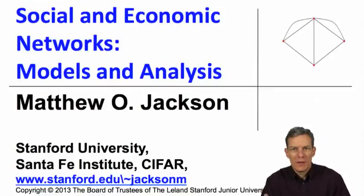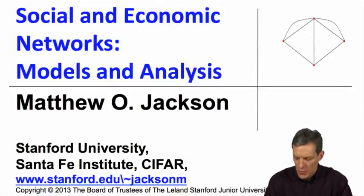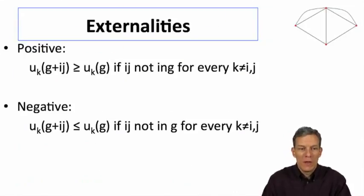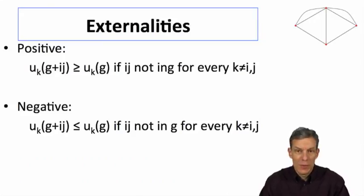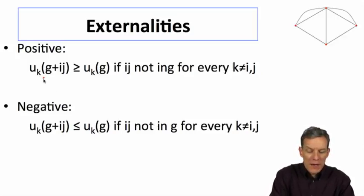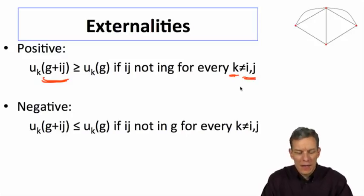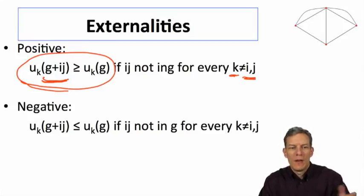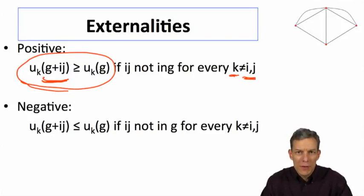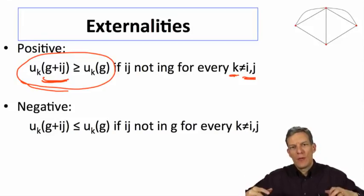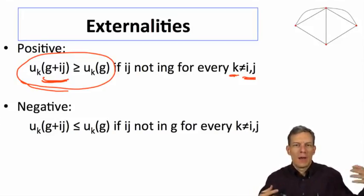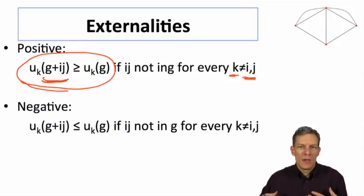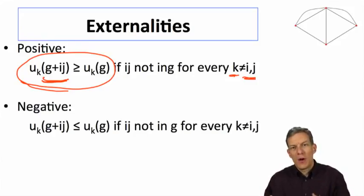Let's have a look at general forms of externalities in network formation models where we're modeling the payoffs to players. We can differentiate between two types of externalities. We'll think of positive externalities as a situation where if we add a link IJ to a network G and consider some other individual who's not one of the participants in that link, they do weakly better than they did before. Spillovers to other individuals from a relationship are net positives — if I form a new friendship, my current friends get value from information I'm getting or indirect favors.